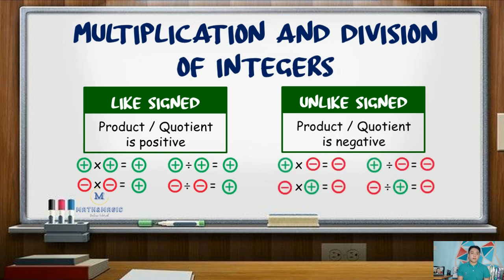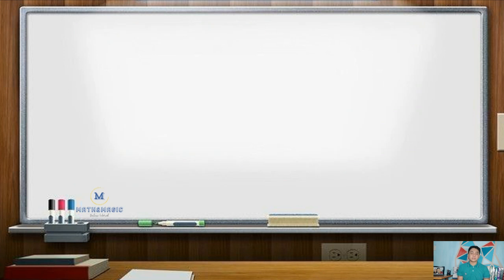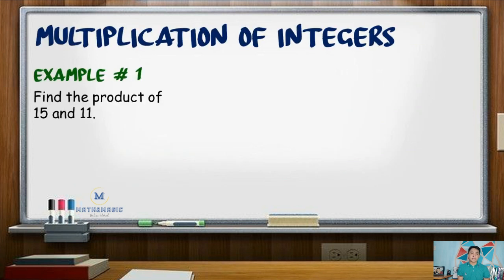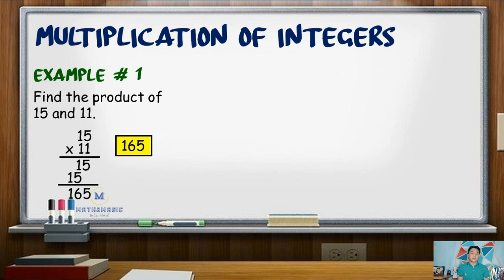Example number 1: positive 15 times positive 11. Simply multiply the numbers — that is 165. Since both integers are positive, the product is also positive, giving us positive 165.